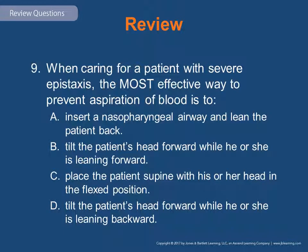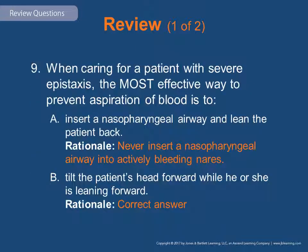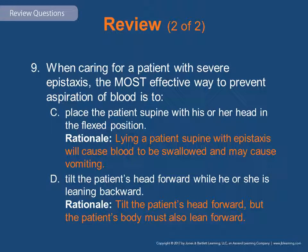Review question 9: When caring for a patient with severe epistaxis, the most effective way to prevent aspiration of blood is to insert a nasopharyngeal airway and lean the patient back, tilt the patient's head forward while leaning forward, place the patient supine with head flexed, or tilt the patient's head forward while leaning backward? The answer is B — leaning forward with the head tilted forward will stop bleeding from trickling down the throat, decreasing the risk that the patient will swallow blood which may cause vomiting or aspiration. Never insert a nasopharyngeal airway into an actively bleeding nare. Never lie them on their back. The patient's body must be leaning forward with head tilted forward.